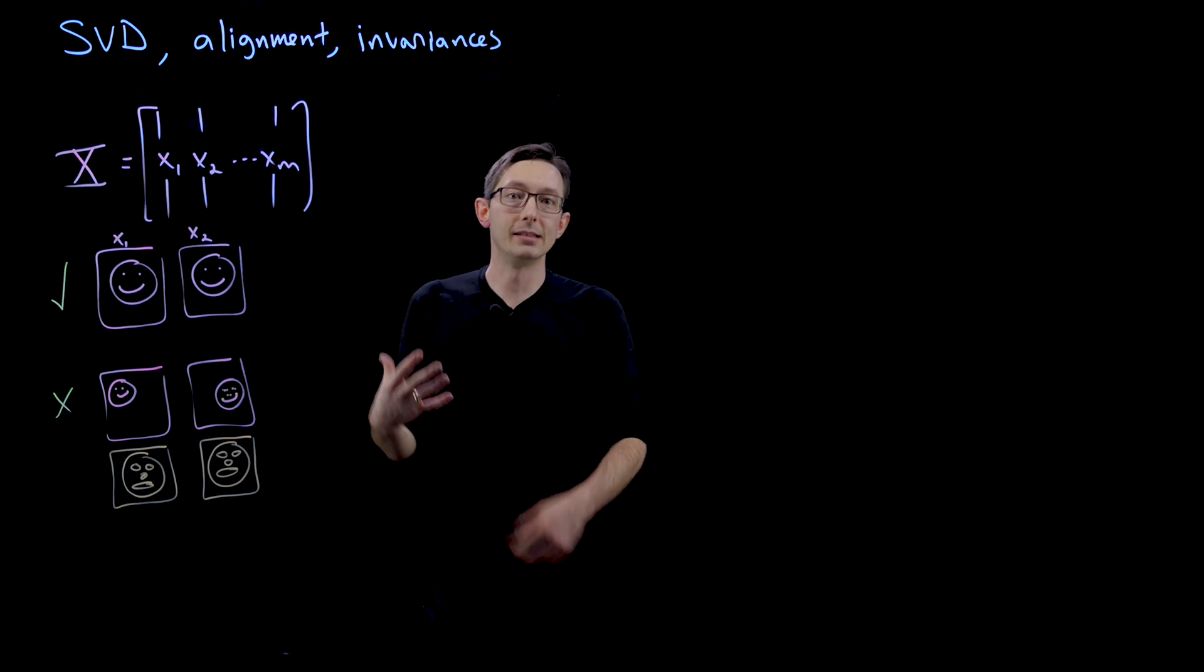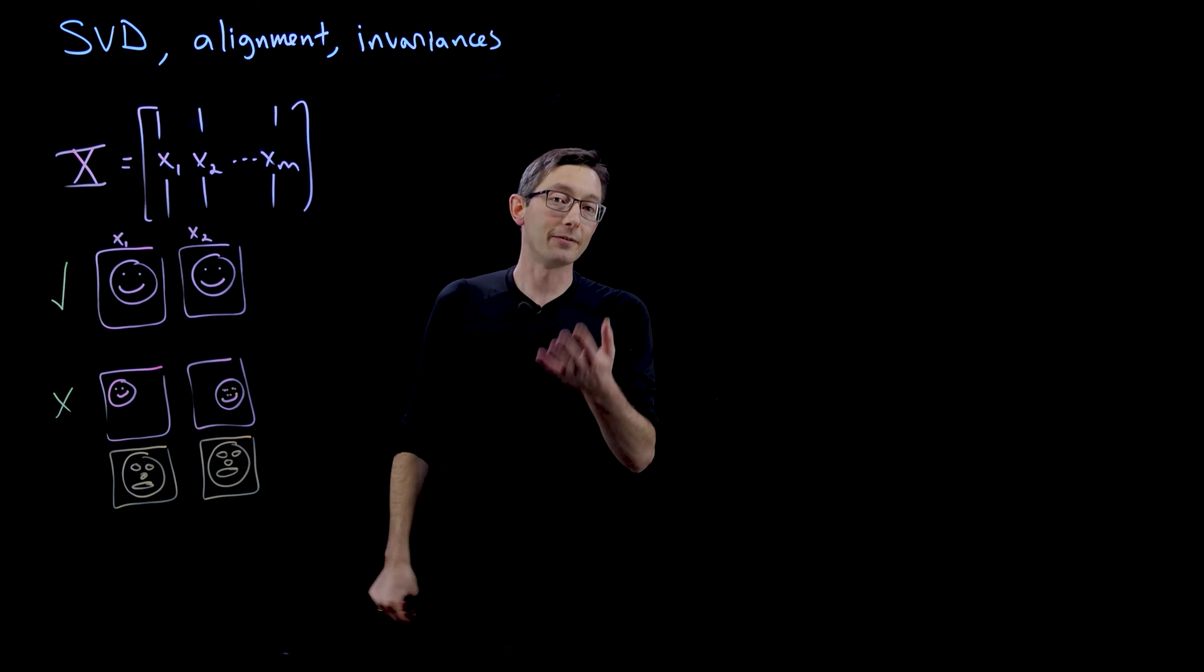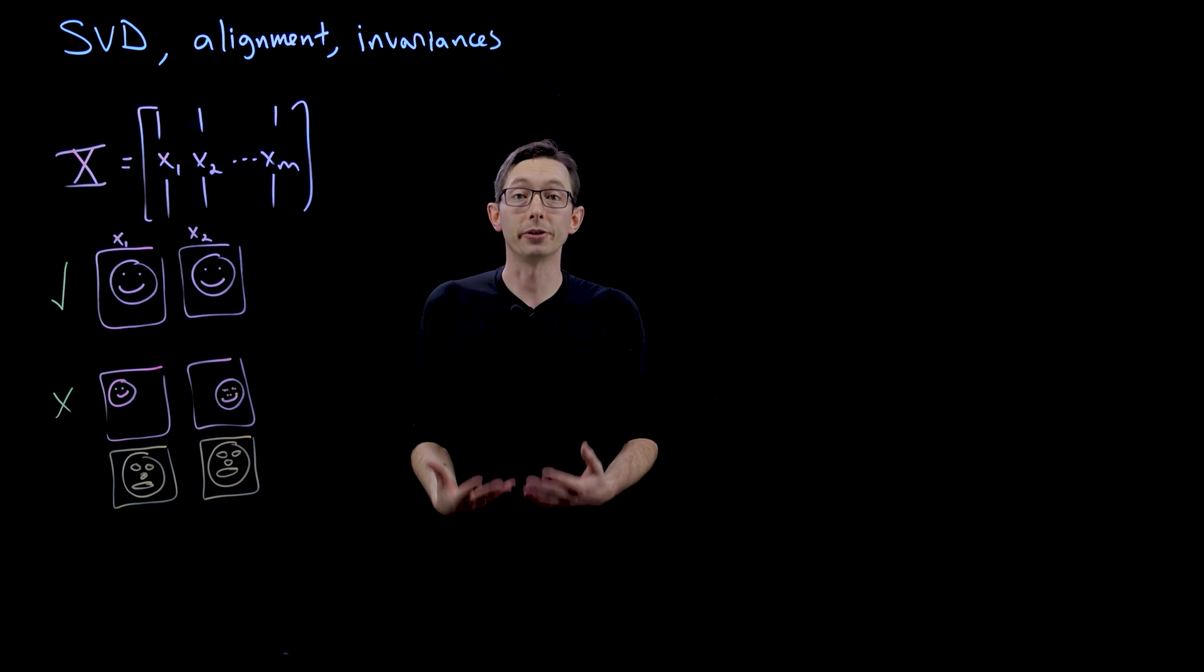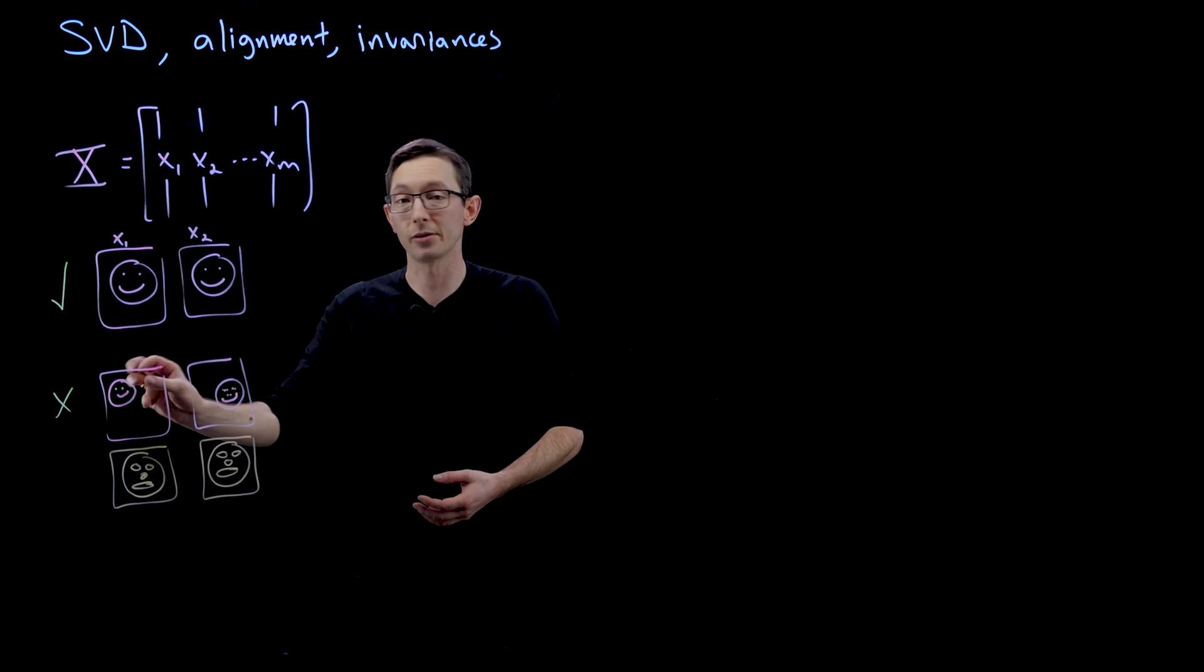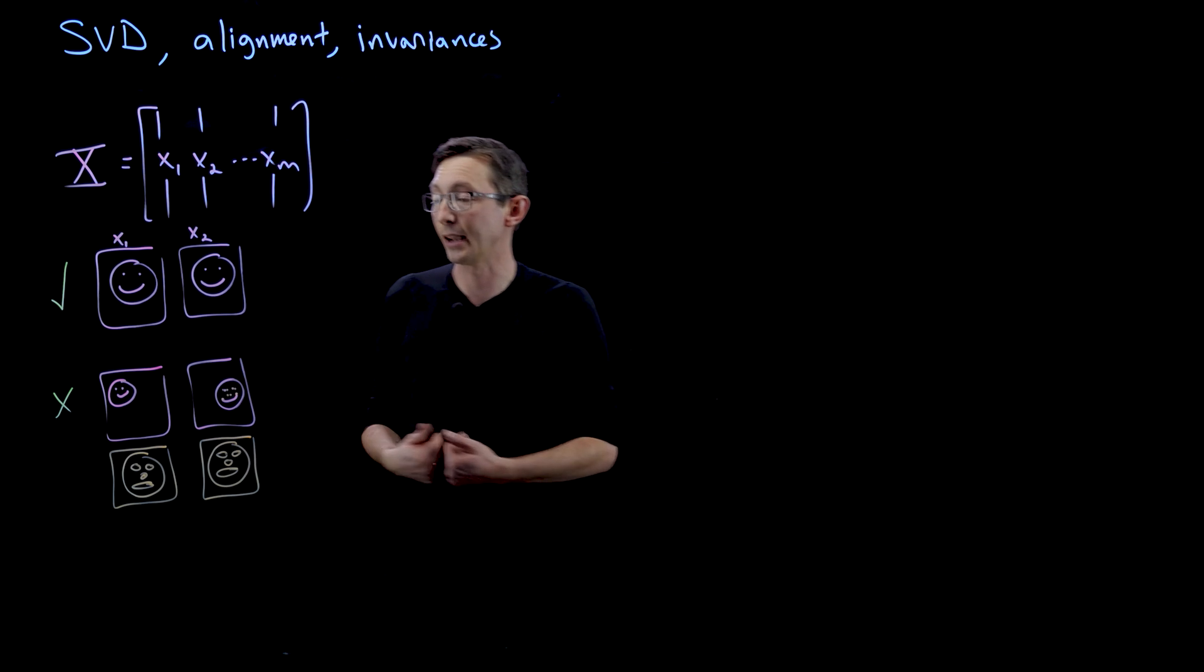Modern methods in optimization are starting to get dimensionality reduction that has these invariances. And in fact, that's why people like convolutional neural networks so much is because they capture this translational invariance that is so easy for us to handle in images.